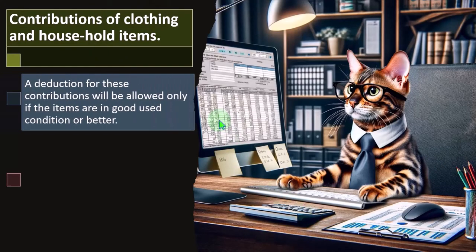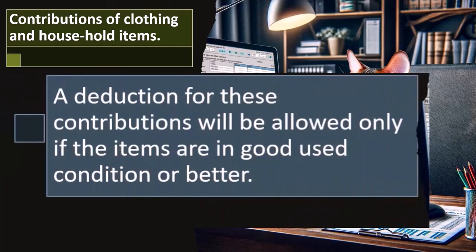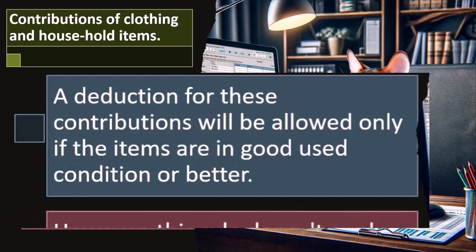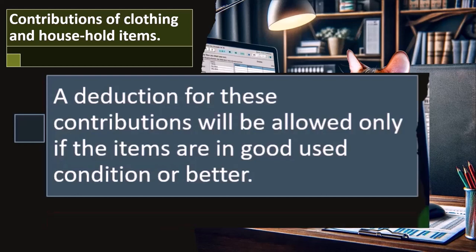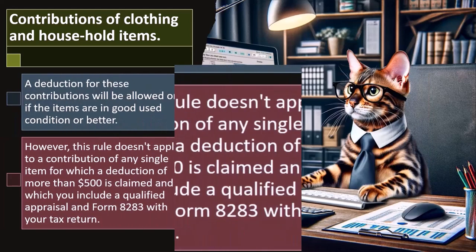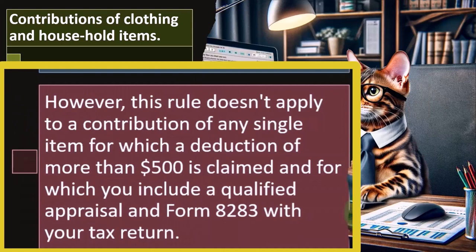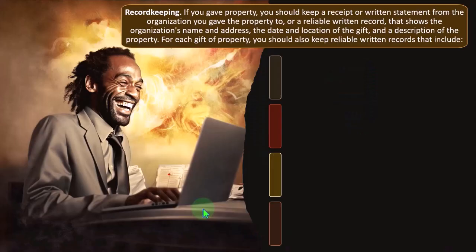Contributions of clothing and household items: a deduction for these contributions will be allowed only if the items are in good used condition or better. In theory that's good wordage, but it's hard to know in practice — your clothes might be good and usable even with holes. However, this rule doesn't apply to a contribution of any single item for which a deduction of more than $500 is claimed and for which you include a qualified appraisal and Form 8283 with your tax return.